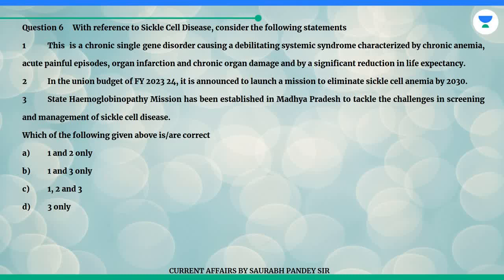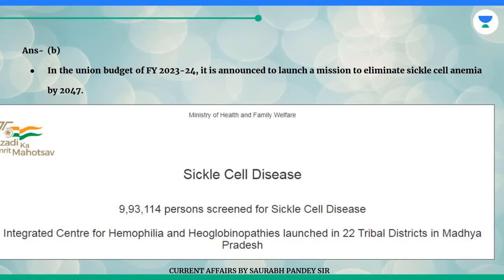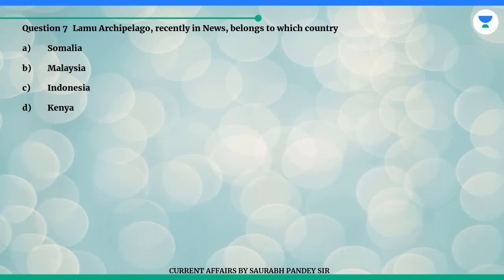Which of the following given above is correct? Answer is B. In the Union Budget of FY 2023-24, it was announced to launch a mission to eliminate sickle cell anemia by 2047.